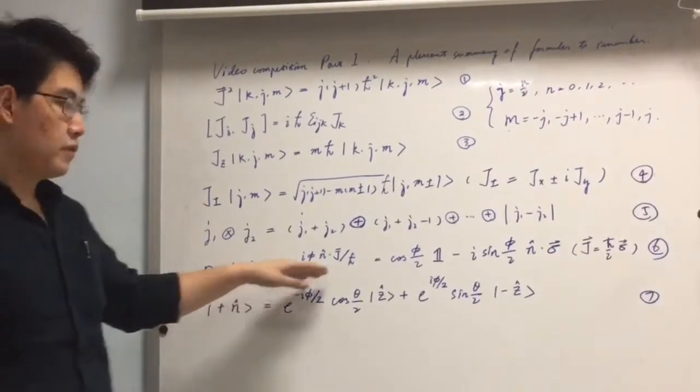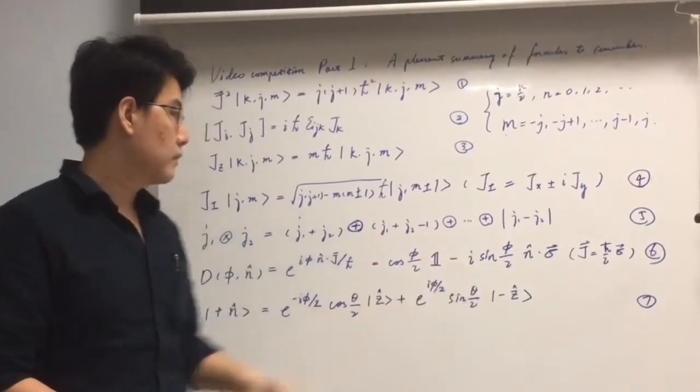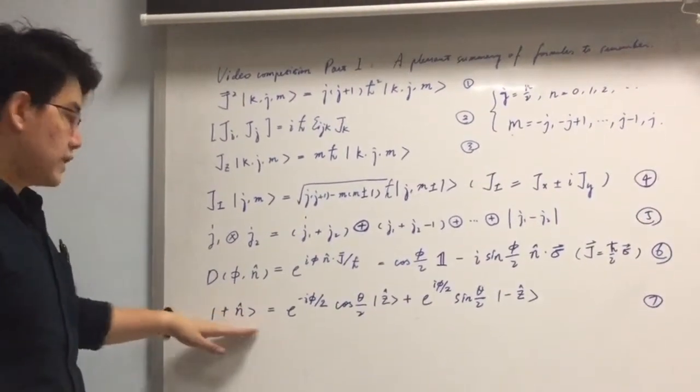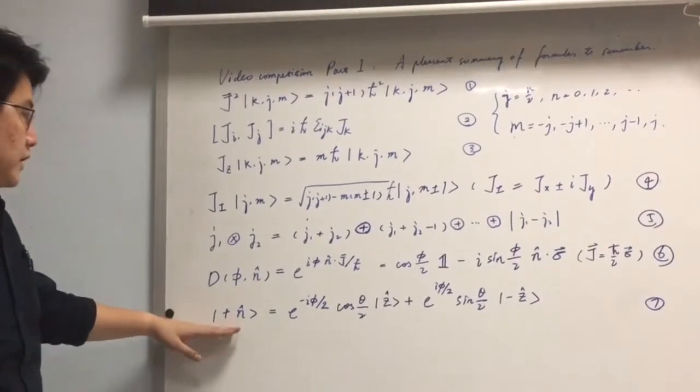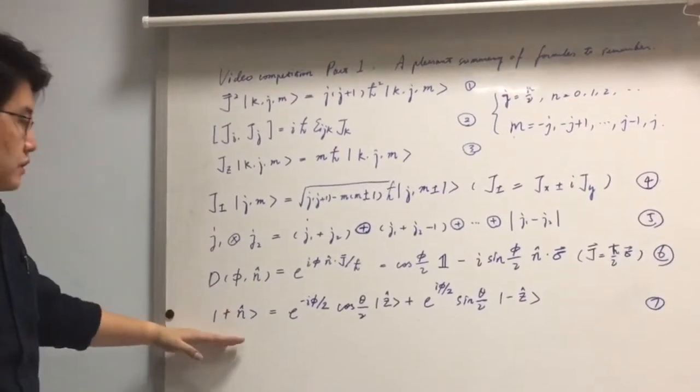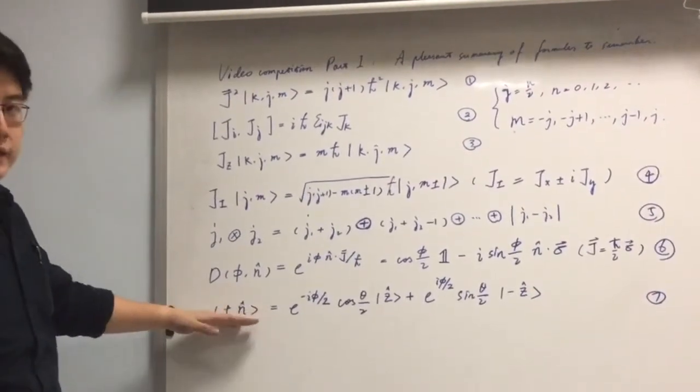And this can be further simplified by Taylor expansion. In the last equation, we can see that this ket is actually the eigenket of the rotation operator. And in general case, this is also the eigenket of the spin along n-axis.